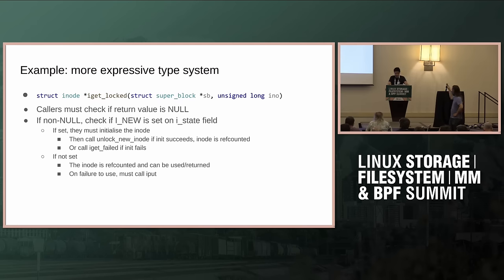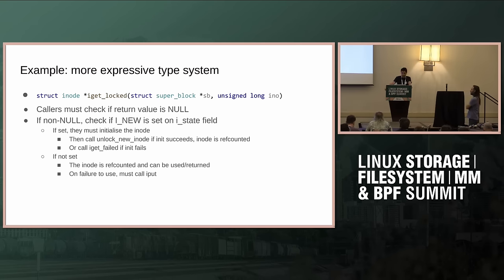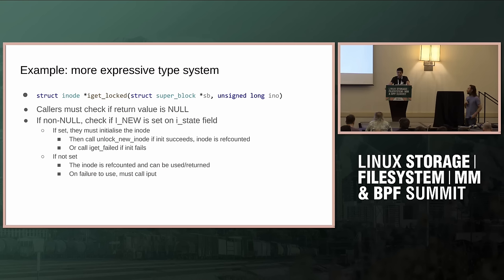A simple example here of the expressiveness of the type system — this is iGetLocked. It's a simple example, but it illustrates how much easier Rust makes using this function. When you call this function, you have to check if it failed and returned null — in that case you return failure. But if it's non-null, you have to look at the iState field to see if it's a new inode or an existing one, because you're trying to get it if it exists or create one if it doesn't. If it is new, you have to initialize it and remember to call unlock_new_inode.